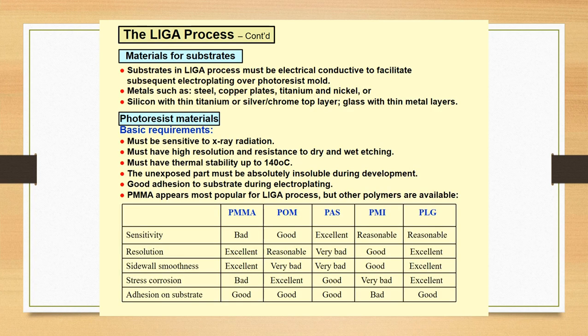What materials have to be used for the substrate in the LIGA process? Substrate in the LIGA process must be electrically conductive to facilitate subsequent electroplating over the photoresist mold. Metals such as steel, copper plates, titanium, or nickel can be used. Silicon with thin titanium or silver on top layer, or glass with thin metal layers, can also be used.